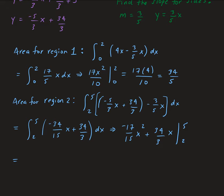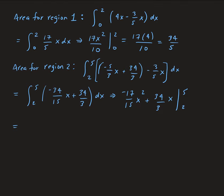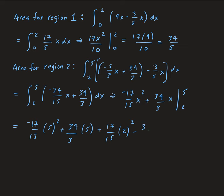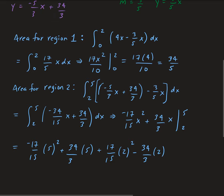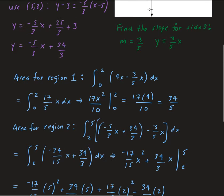Taking the integral gives us negative 17 over 15 times x squared plus 34 over 3 times x, evaluated from 2 to 5. Plugging in 5: negative 17 over 15 times 25 plus 34 over 3 times 5. Then minus the value at 2: positive 17 over 15 times 4 minus 34 thirds times 2.